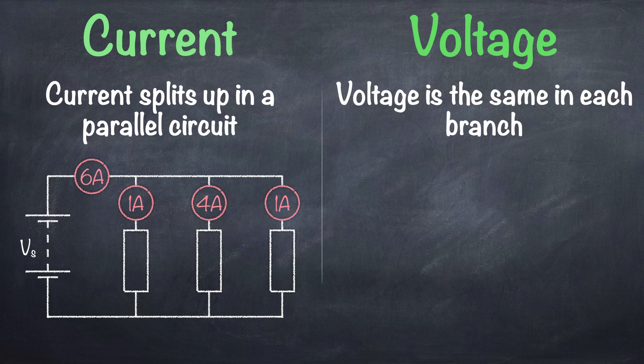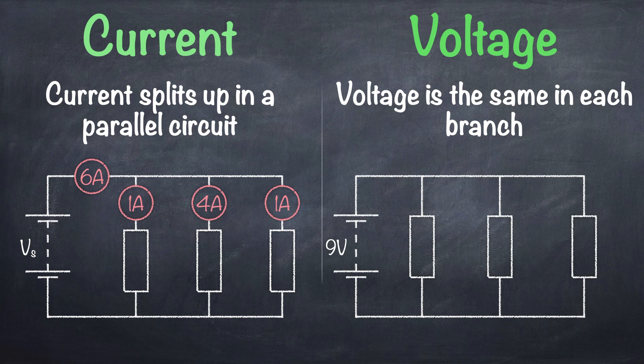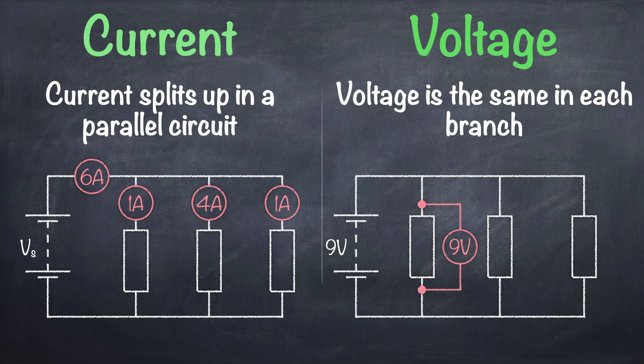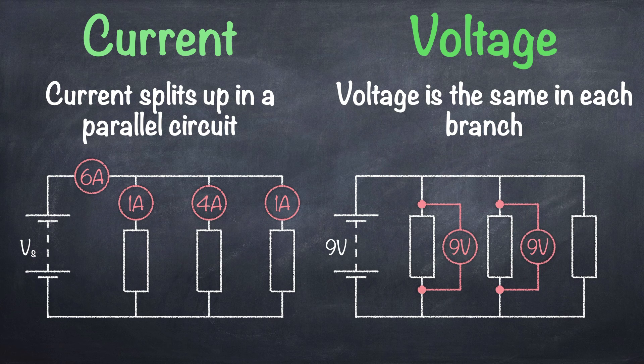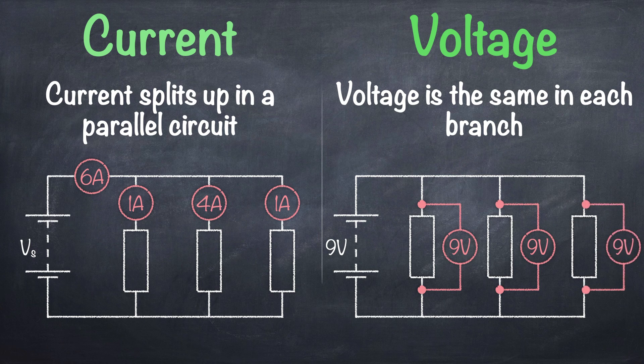Voltage are the same in each branch and is equal to the supply voltage. In this circuit with a supply voltage of 9 volts, the voltage across the first resistor is 9 volts, the voltage across the second resistor is 9 volts and the voltage across the third resistor is... any guesses? Yes that's right, it's 9 volts. Well done you.